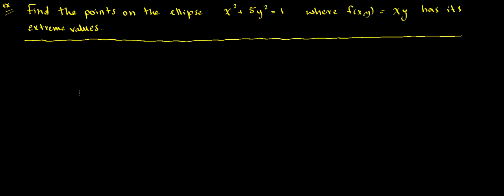Hi, in this video I'm going to be solving an example using Lagrange multipliers. The question asks us to find the points on the ellipse x squared plus 5y squared equals 1, where the function f(x,y) equals x times y has its extreme values. We want to find the extreme values of this function that lie on the ellipse. I suggest you pause the video and try to solve this problem, then come back and see how I solved it.